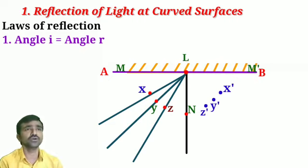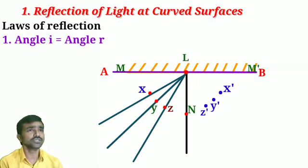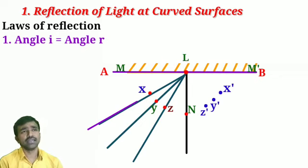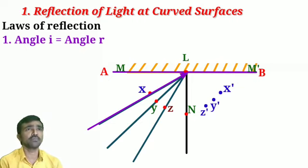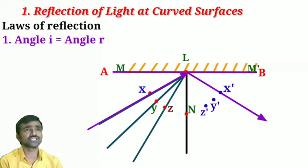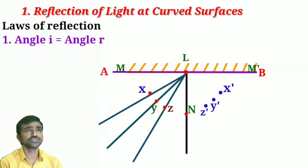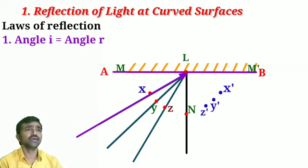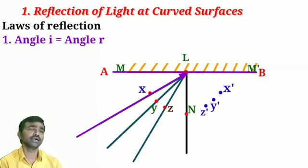Now, what happens when we direct light along these paths? We need to identify that. Select your laser light. I am going to use light rays along these paths. When the light ray meets the mirror surface, according to reflection it bounces back from the point of incidence. Here I will use point L as the point of incidence for all rays. First, I will focus the light ray at L along the path XL.